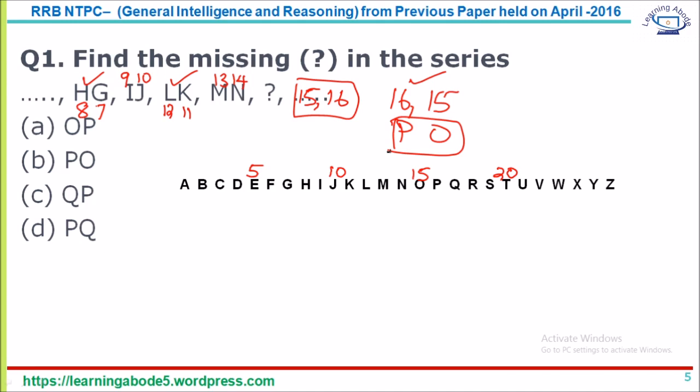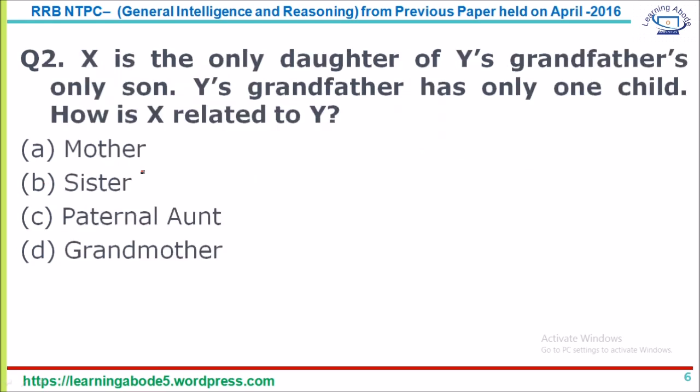The position is changing for every alternate term, so the answer is option B: PO. Question 2: X is the only daughter of Y's grandfather's only son. Y's grandfather has got only one child. How is X related to Y?